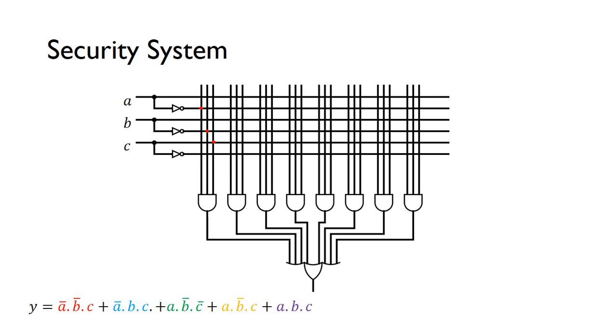This AND gate implements that minterm. For the next minterm, NOT A and B and C, we've got NOT A again so we need a connector here, B here.